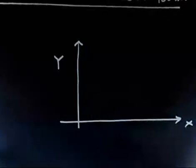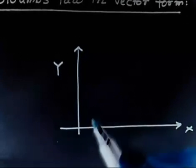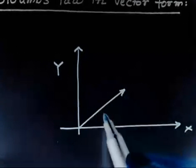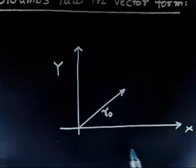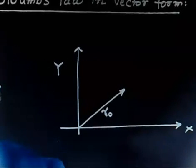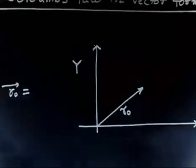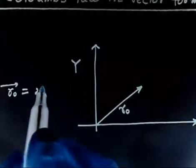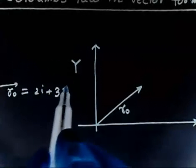And r0 that is 2i plus 3j. So r0 is given. So this is the vector r0. And r0 in the problem is given as 2i plus 3j. So r0 is equal to 2i plus 3j.